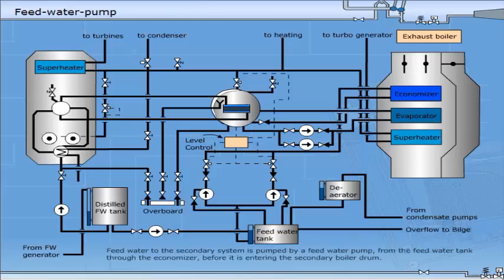Feed water to the secondary system is pumped by a feed water pump from the feed water tank through the economiser, before it is entering the secondary boiler drum.